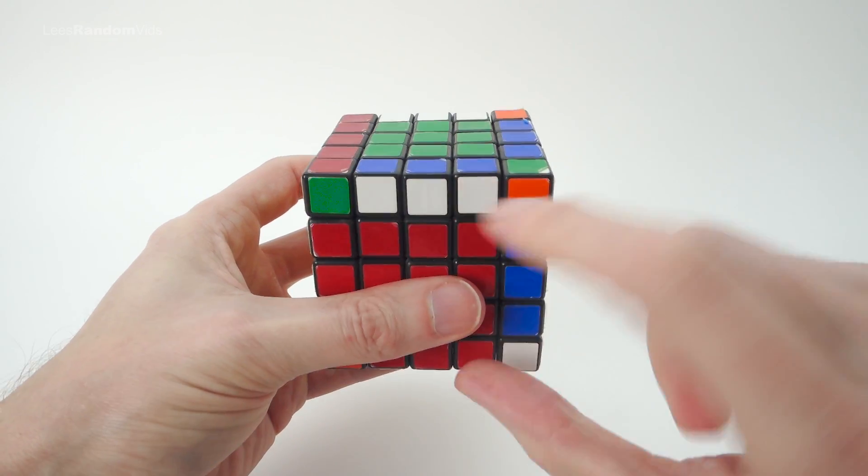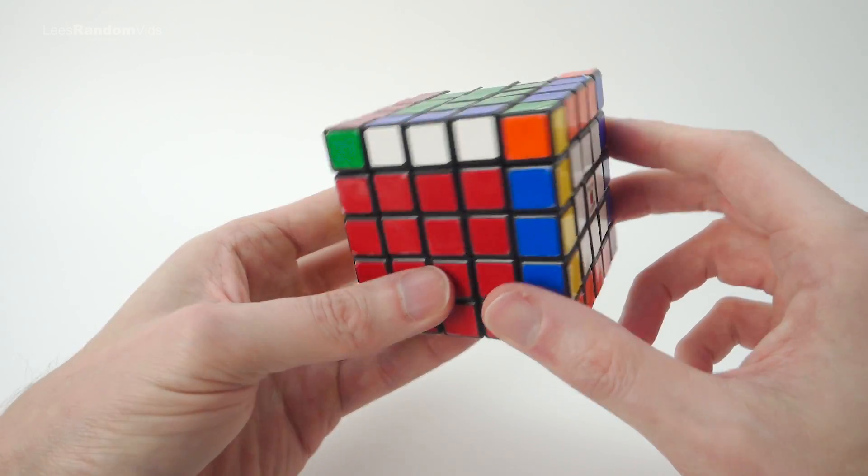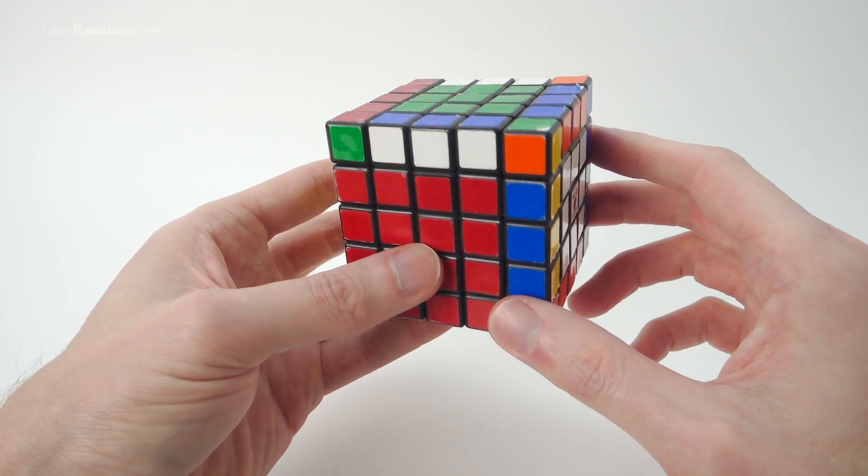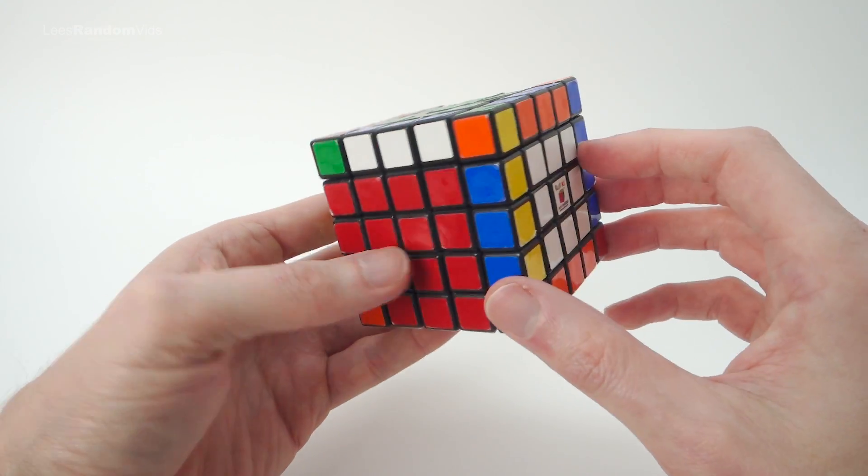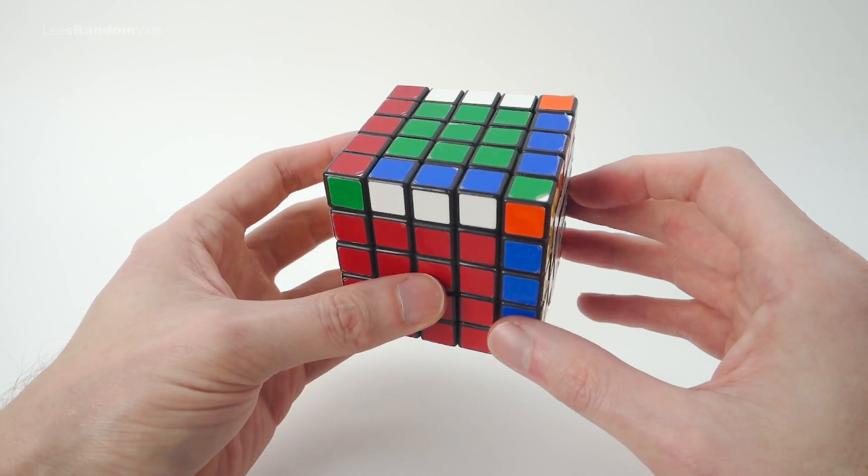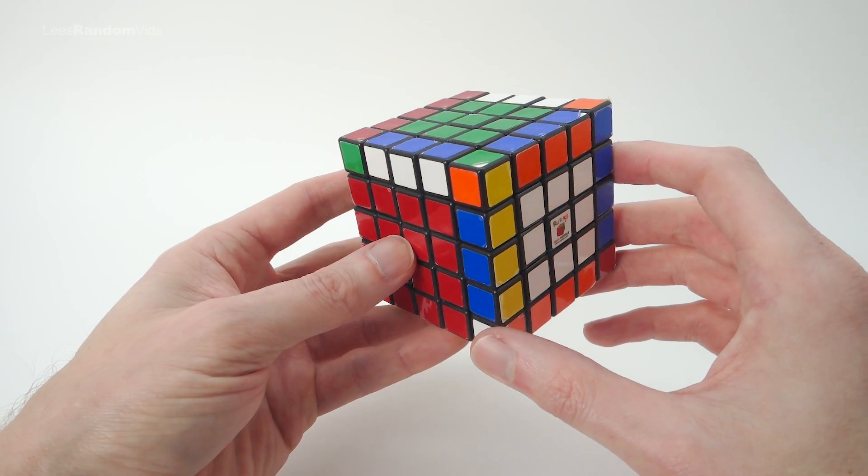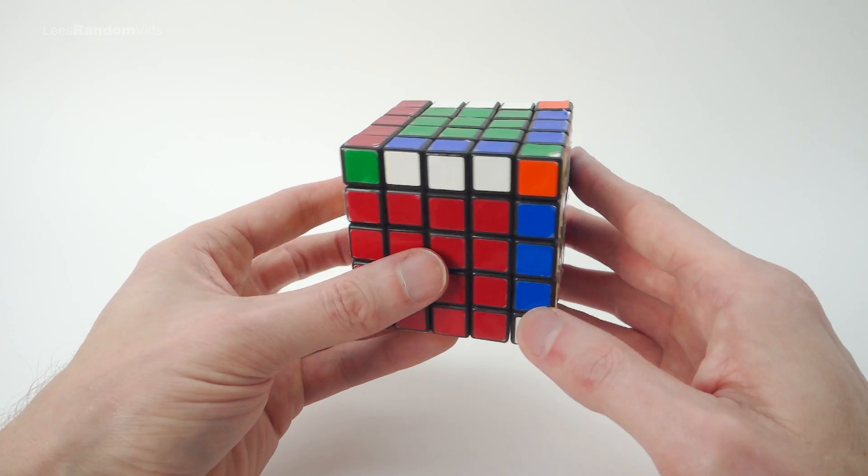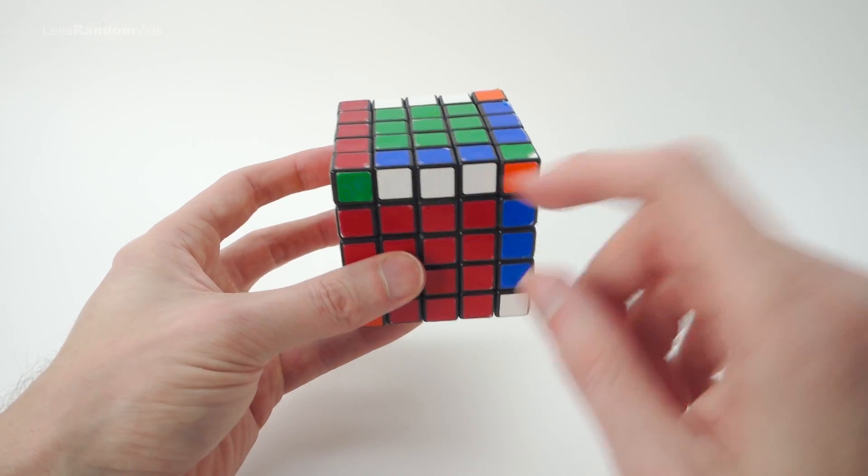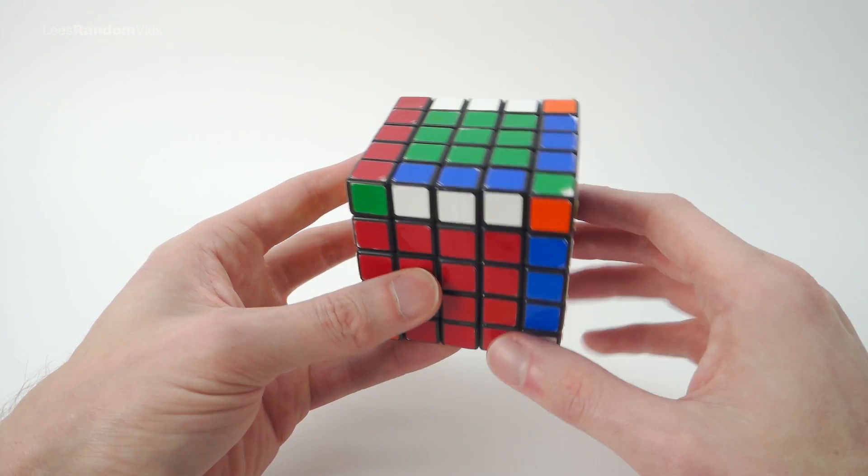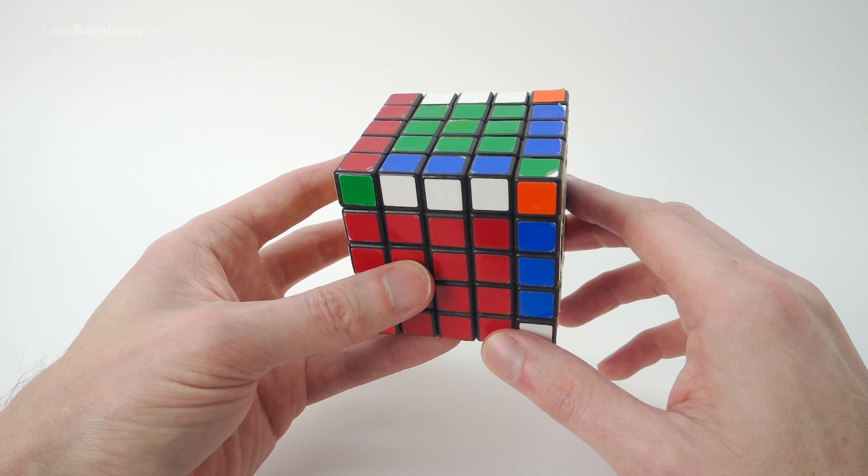And that has corrected these two pieces and corrected the parity error. Now we basically have a scrambled 3x3. And as I teach on my 5x5 video, you now solve it the same way you would a 3x3. As I said before, if you want to avoid running into this parity error, therefore you don't need to learn this really long algorithm, then check out my other video showing you how to solve the edge pieces on a 5x5. And I'll show you the method and how to avoid running into this parity error altogether. Hope it helped guys and thanks for watching.